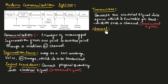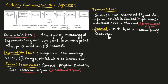Now let us see a channel. The channel is a path between a transmitter and a receiver, which means it helps in sending the information from the transmitter to the receiver.